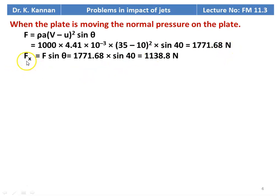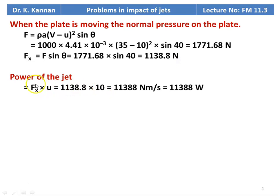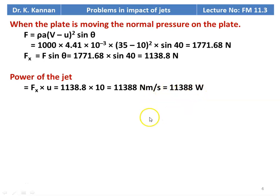The force in the horizontal direction Fx = F × sin(theta) = 1771.68 × sin(40°) = 1138.8 N. The power of the jet = Fx × U = 1138.8 × 10 = 11,388 N·m/s or 11,388 watts.